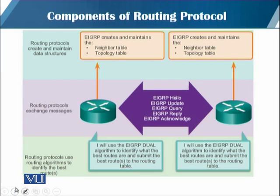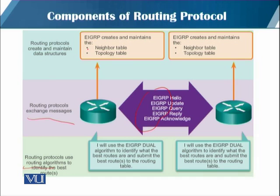کسی بھی routing protocol کی detail میں جانے سے پہلے، ہم overall components دیکھتے ہیں۔ پہلا: routing protocol messages exchange کرتی ہے — جیسے EIGRP کی اپنی specific messages ہیں۔ دوسرا: routing protocol ایک algorithm use کرتی ہے best path نکالنے کے لیے۔ تیسرا: router کچھ data structures maintain کرتا ہے — جیسے EIGRP ایک neighbor table اور ایک topology table maintain کرتا ہے۔